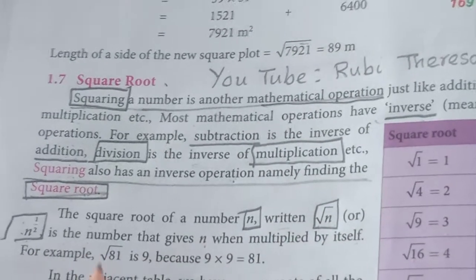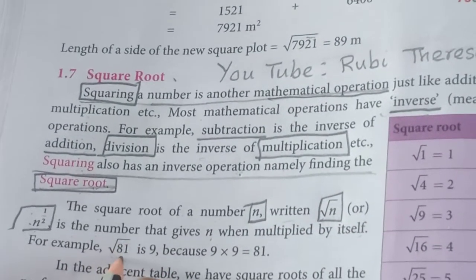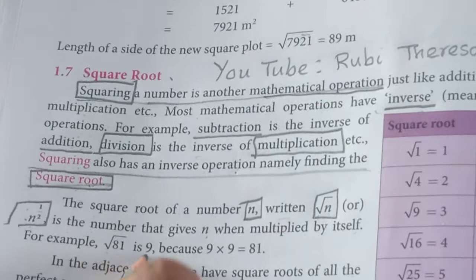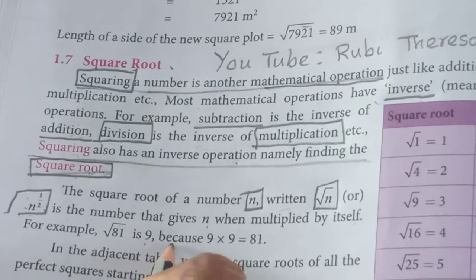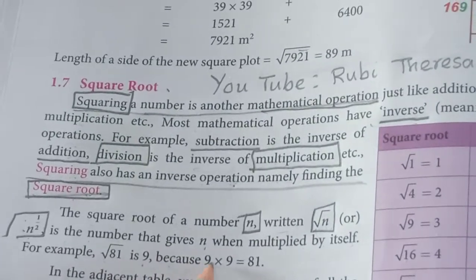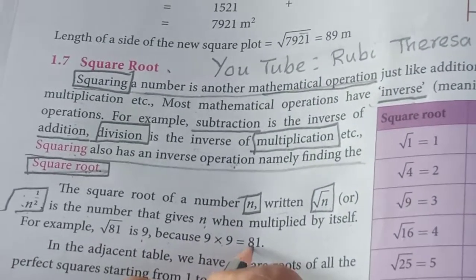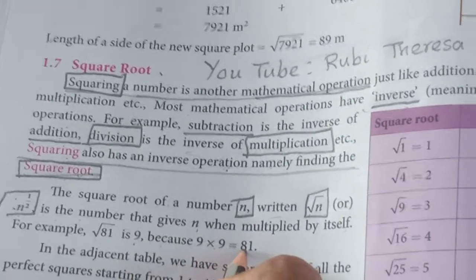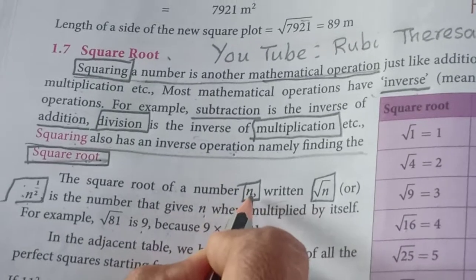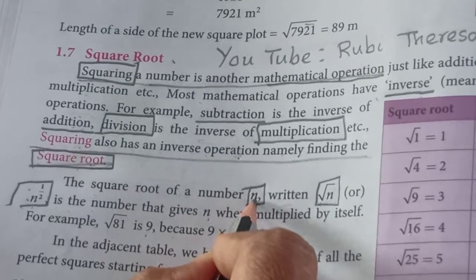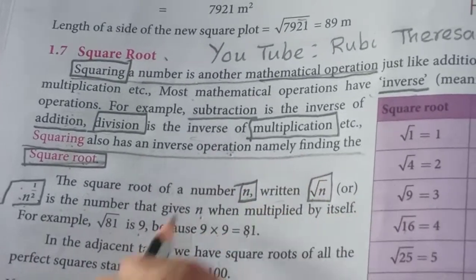For example, root 81 is 9, because 9 nines are 81. For that number, how can you get the root? When you are multiplying the number by itself.